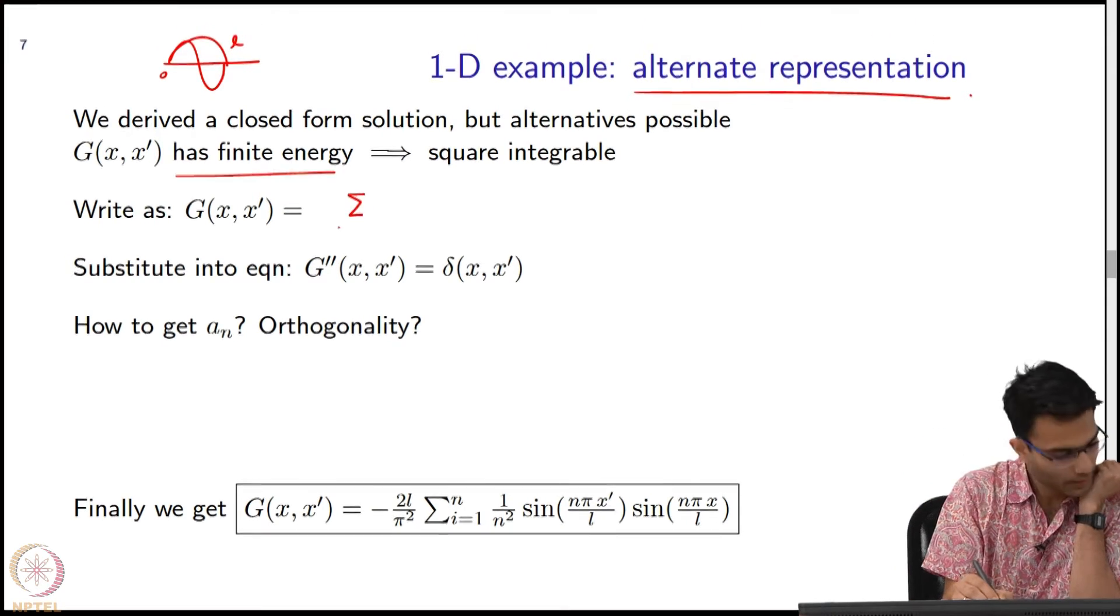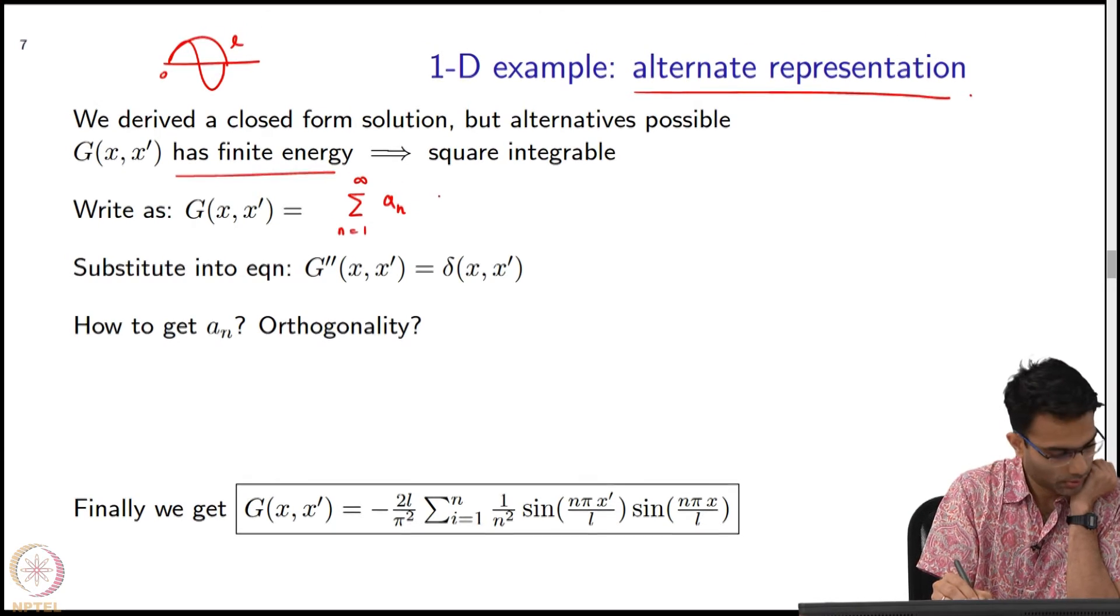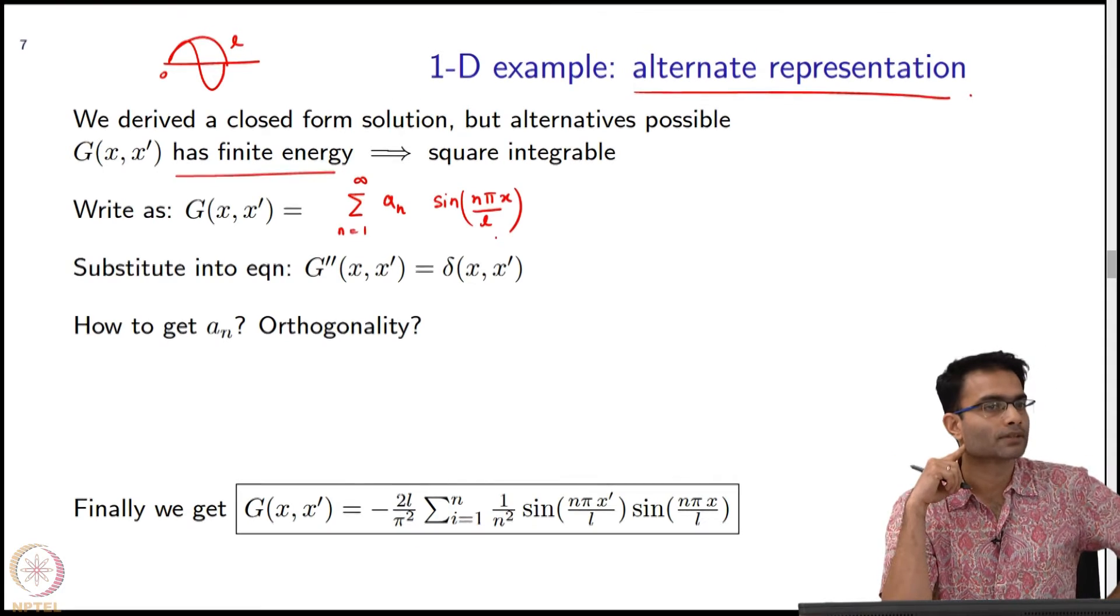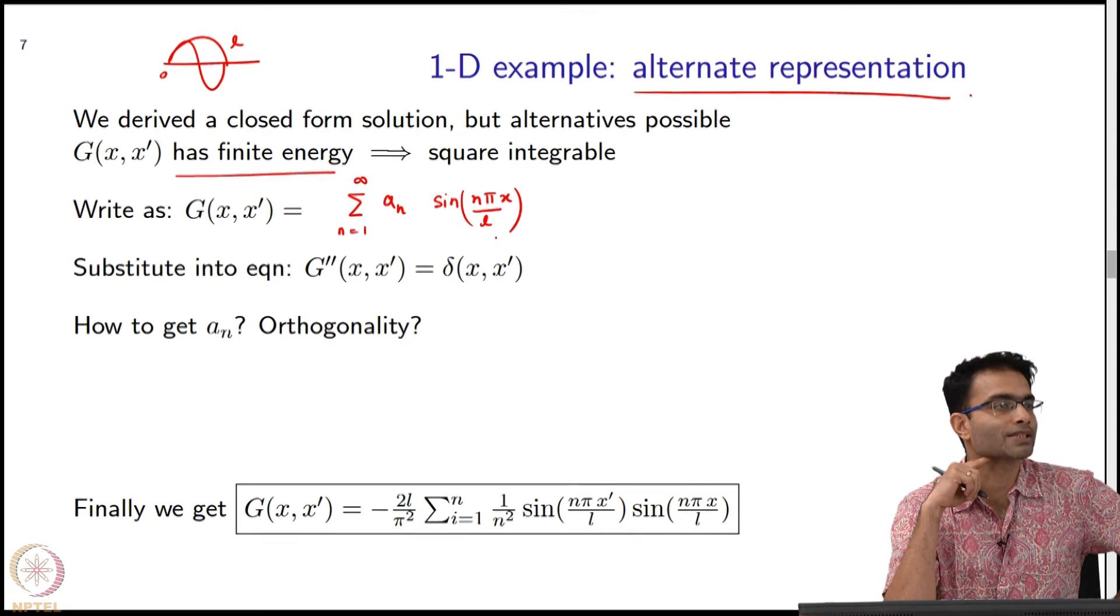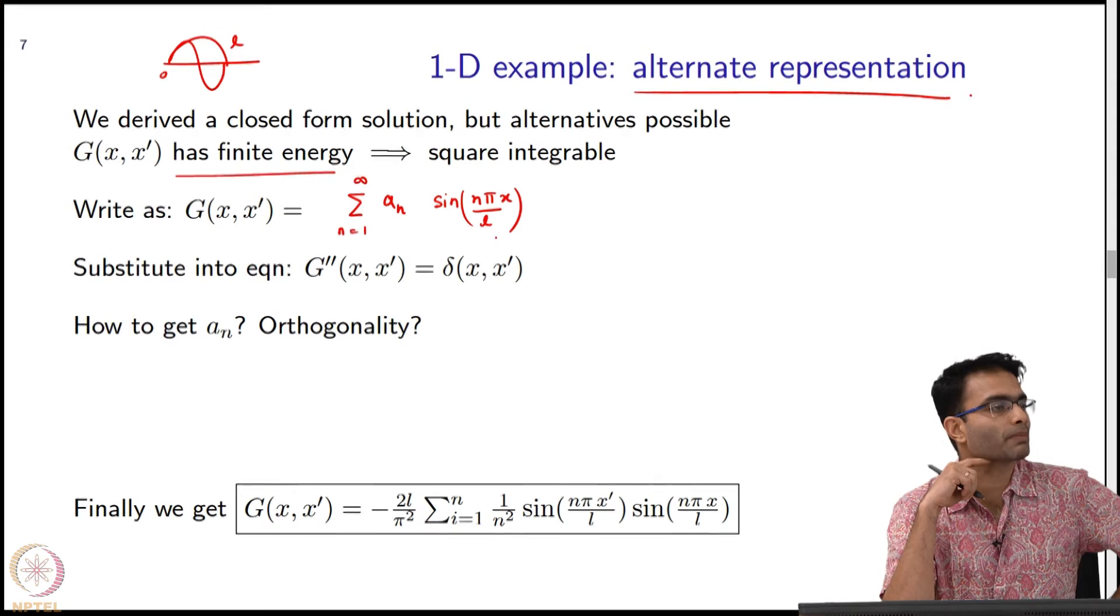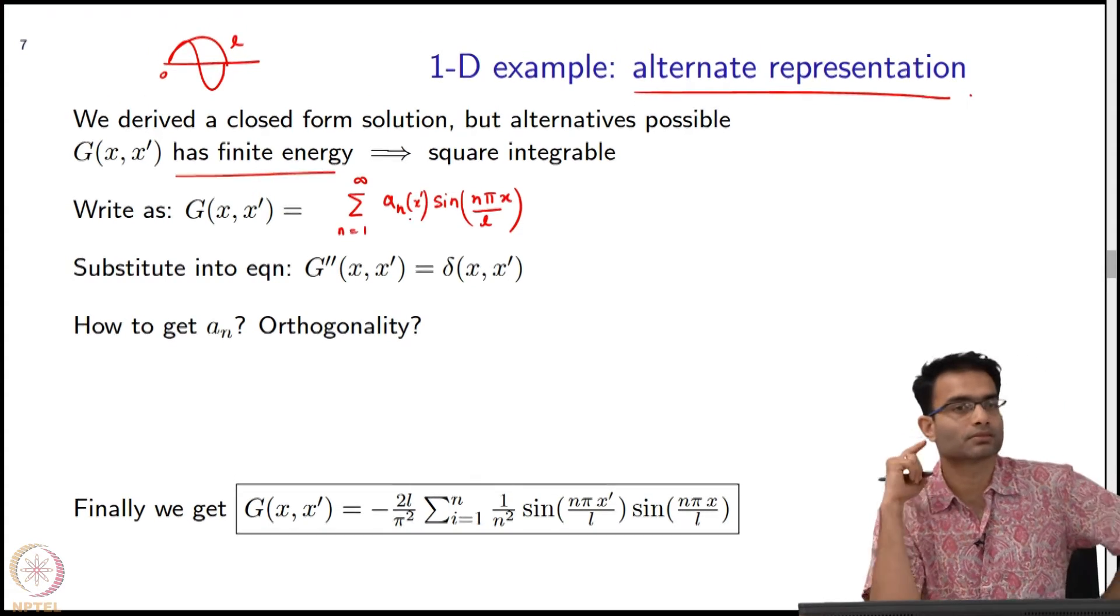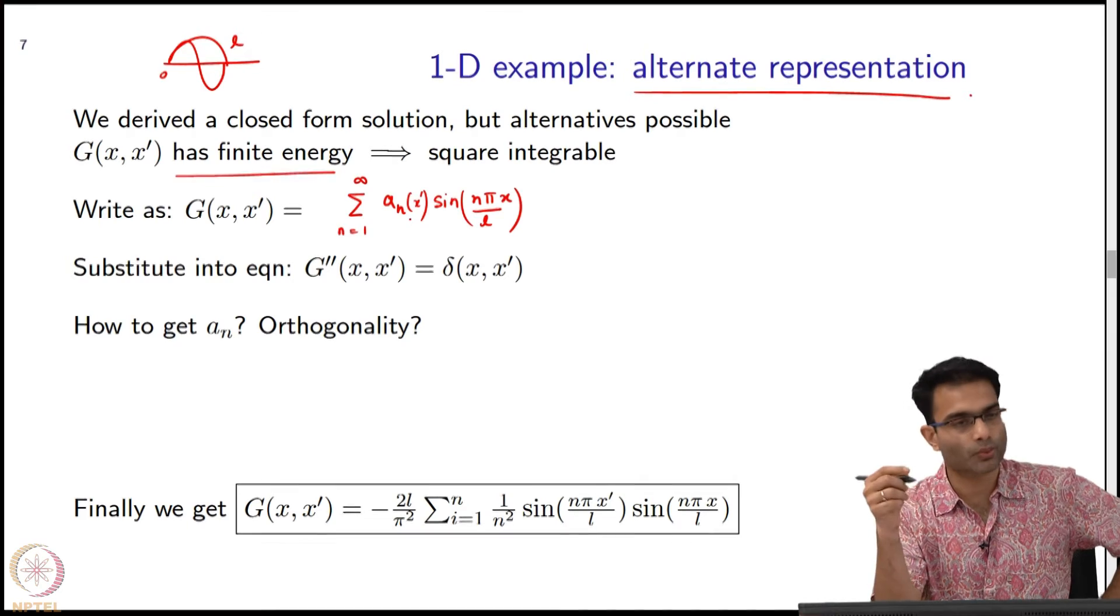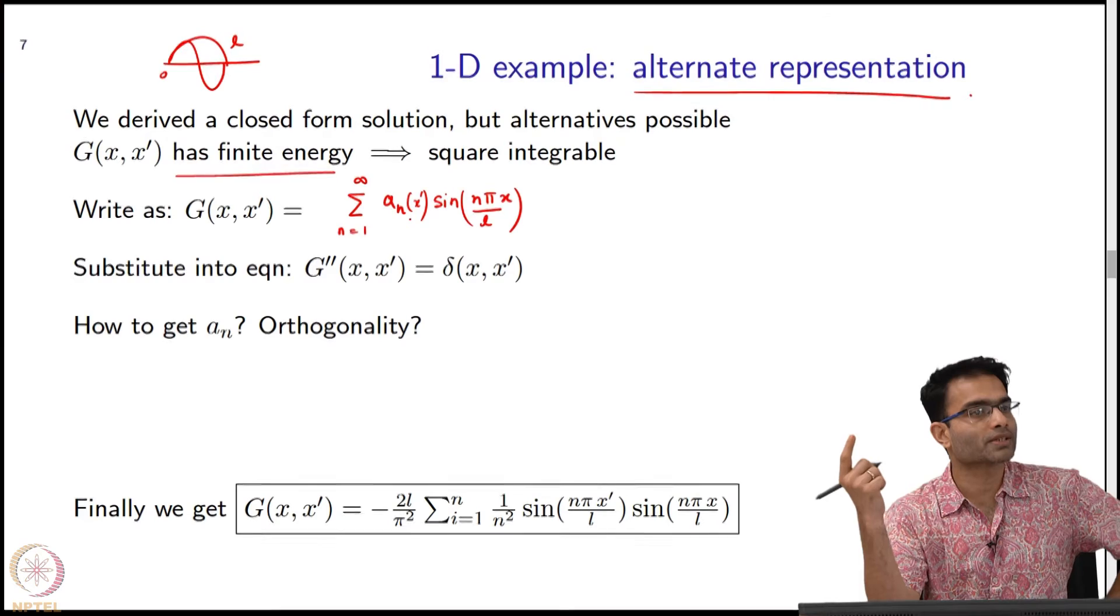I can write this in Fourier series form: n equals 1 to infinity, A_n sin(nπx/L). Now, on the left hand side I have a function of x and x prime. Right hand side seems to be only a function of x, so where will the x prime dependence come from? The coefficient will have x prime dependence. Let us write it like A_n(x').